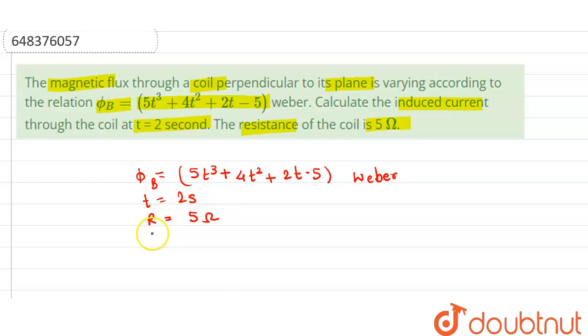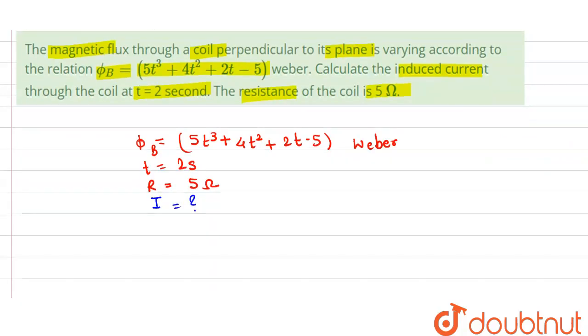We have to find out the induced current I. So we know the formula for induced EMF. Induced EMF E is equal to dφ/dt.